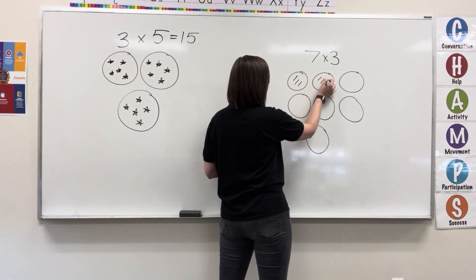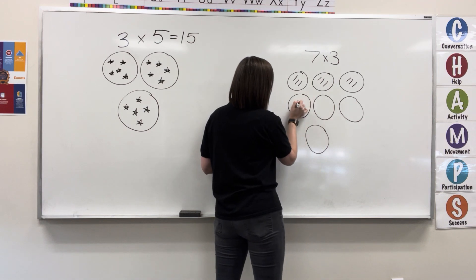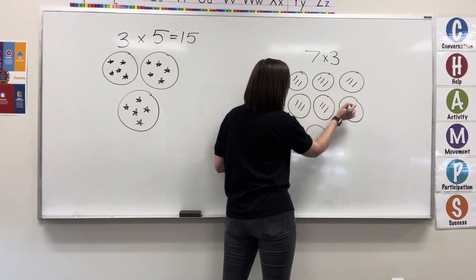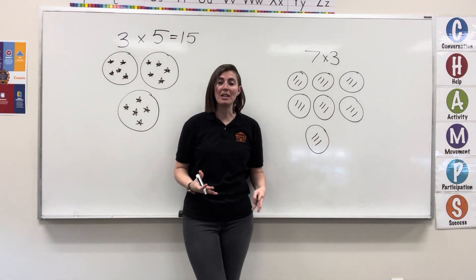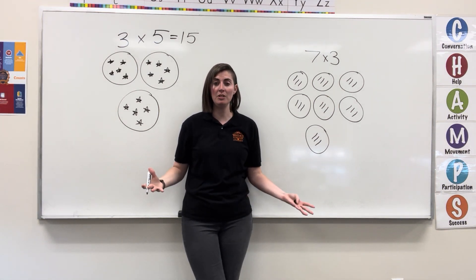So, one, two, three. One, two, three. In each of the seven groups. Now that I have three things in each of the seven groups,